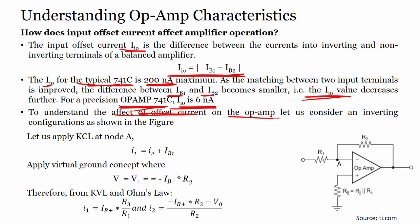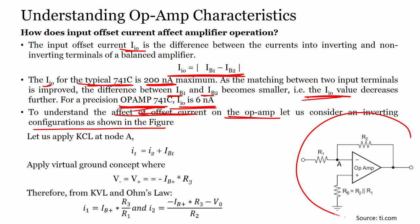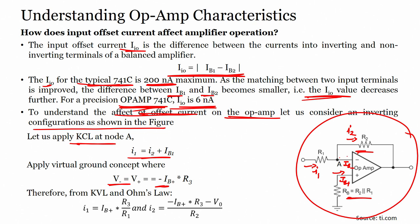To understand the effect of offset current on the op-amp, let us consider an inverting configuration. We have R1, R2, and R3 which equals R2 parallel R1. Applying KCL at node A, I1 = I2 + IB1. Applying virtual ground, V+ = -IB+ × R3, and V- = V+ = -IB+ × R3.